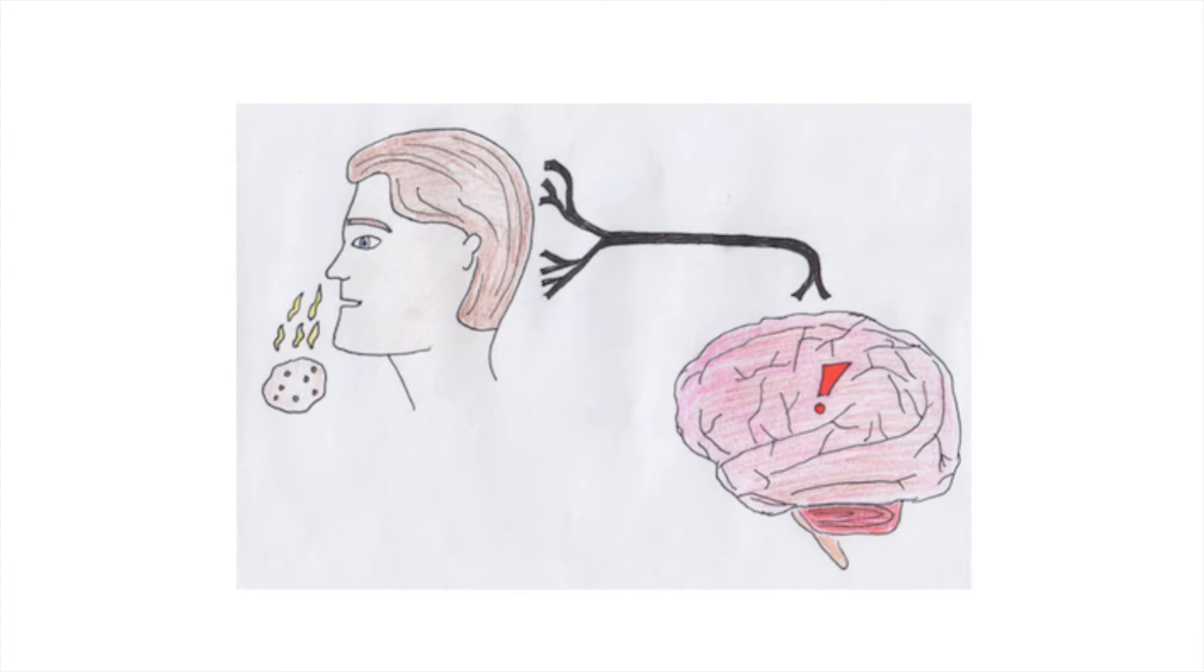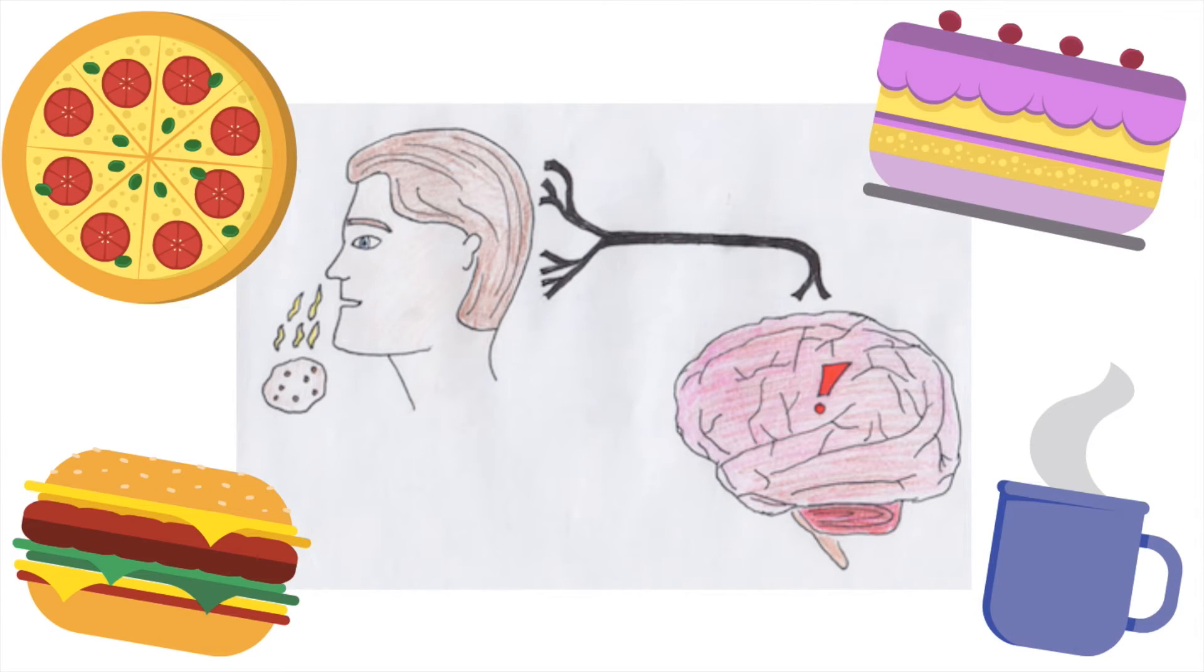Sensory neurons gather all the information outside and inside of our bodies and carry the information into the central nervous system so it can be interpreted. So every time you catch the sweet smell of chocolate chip cookies or your favorite food, your sensory neurons are in action.